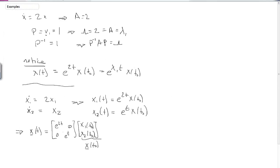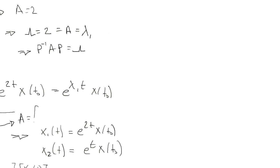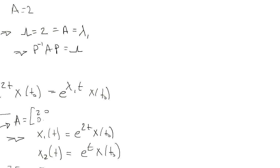We recognize this as the initial condition state vector and this matrix as our matrix exponential, or e to the At. The solution for x(t) is a linear combination of exponentials raised to the eigenvalues of the state matrix A. Here, the state matrix is [2, 0; 0, 1].